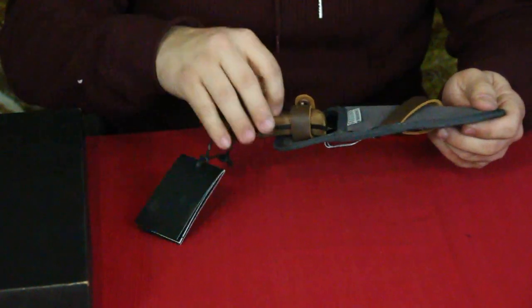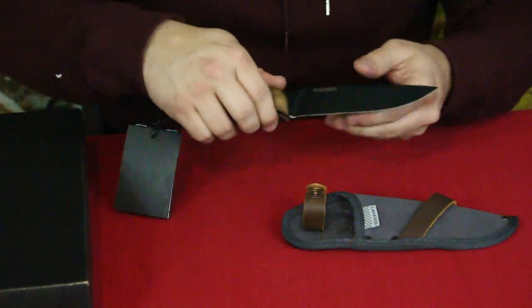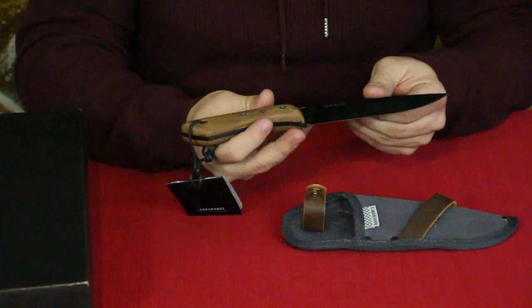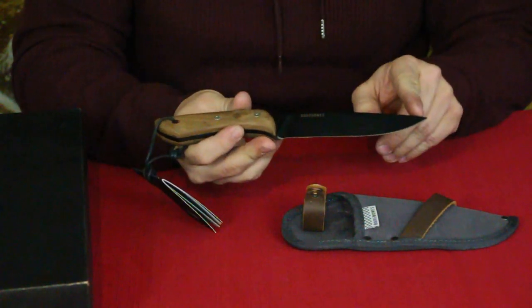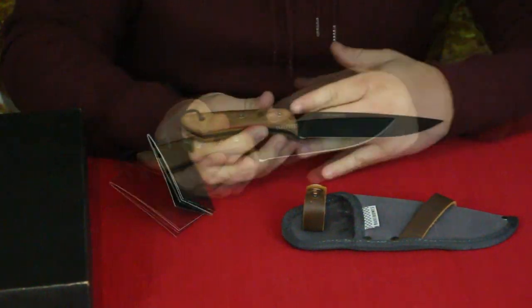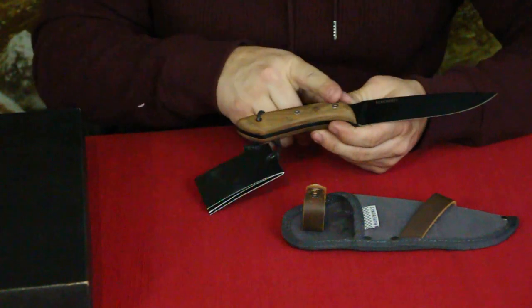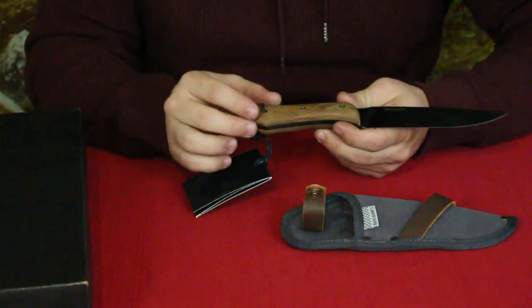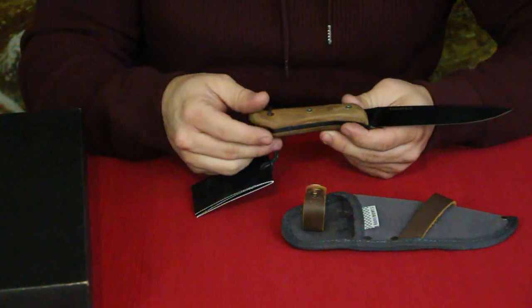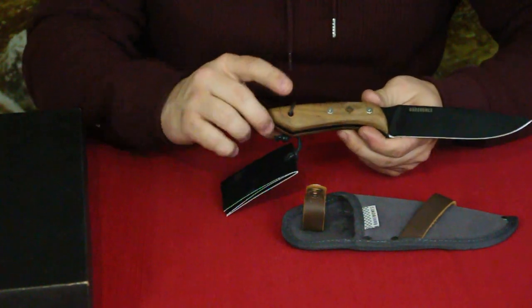Let's go ahead and take this out. As you can see, it is a pretty decent size knife. This is a six-inch blade. We also have a walnut handle which is standard for all of Bare Bones knives.